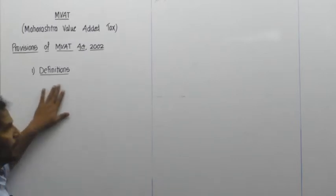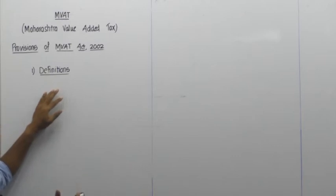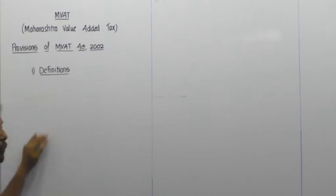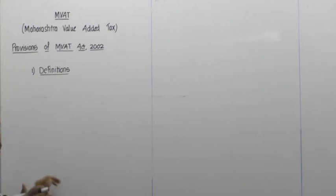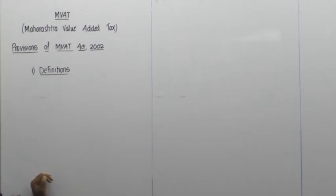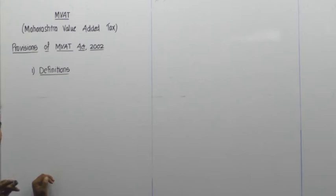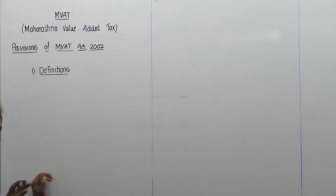We need to learn these definitions in detail along with theory, because not only theory questions come — practical questions also come. If you understand the definition properly, 7 to 8 marks questions you can answer within 5 minutes. The answers are very short — like match-the-following type — so you can score easily, but you need to learn the definitions in detail.